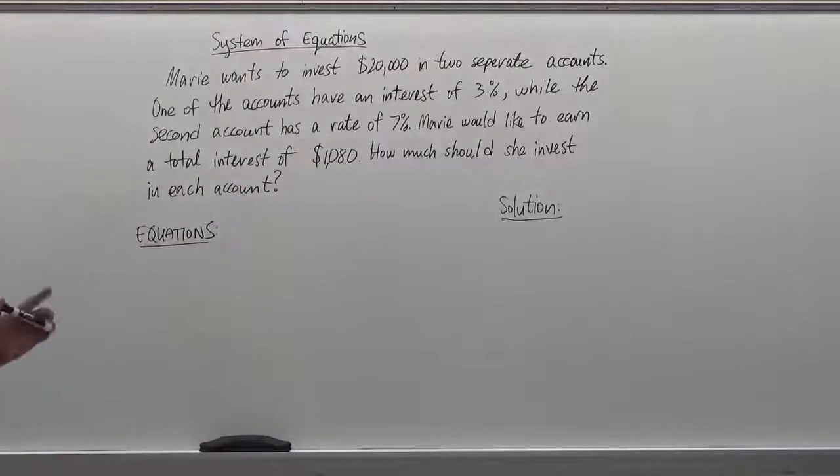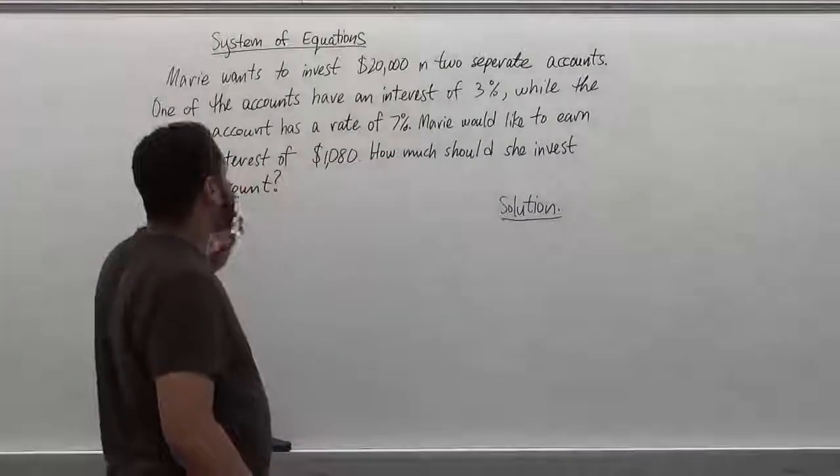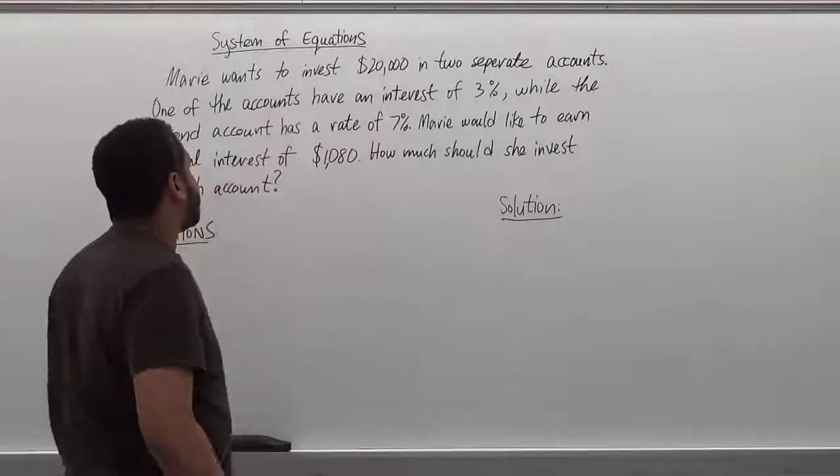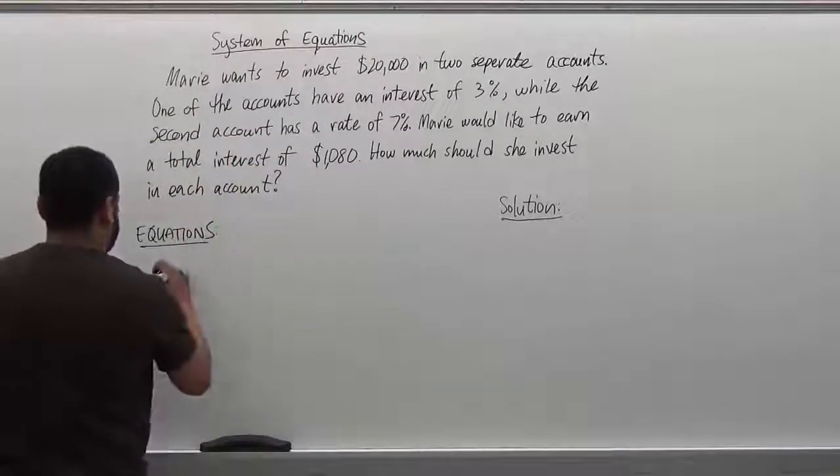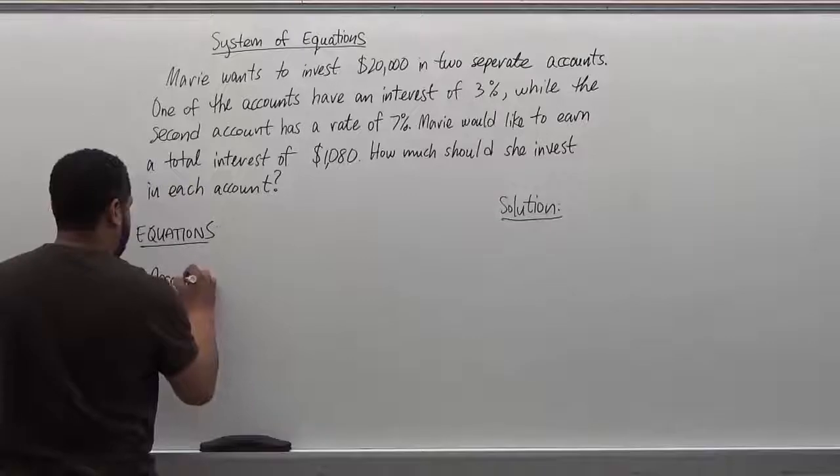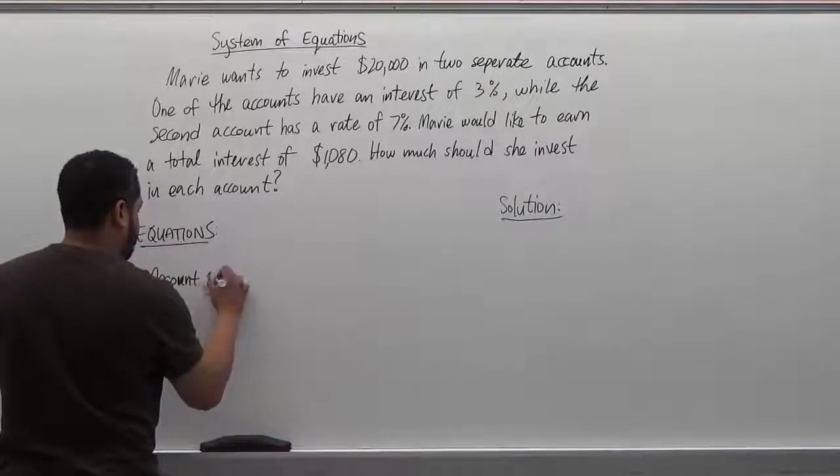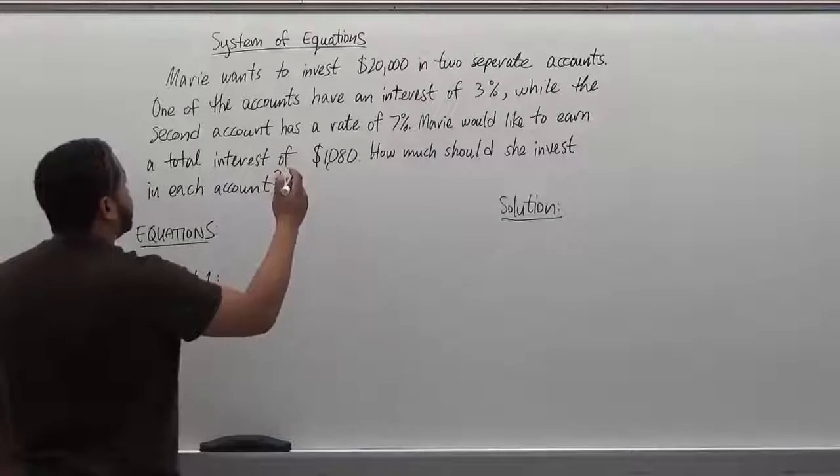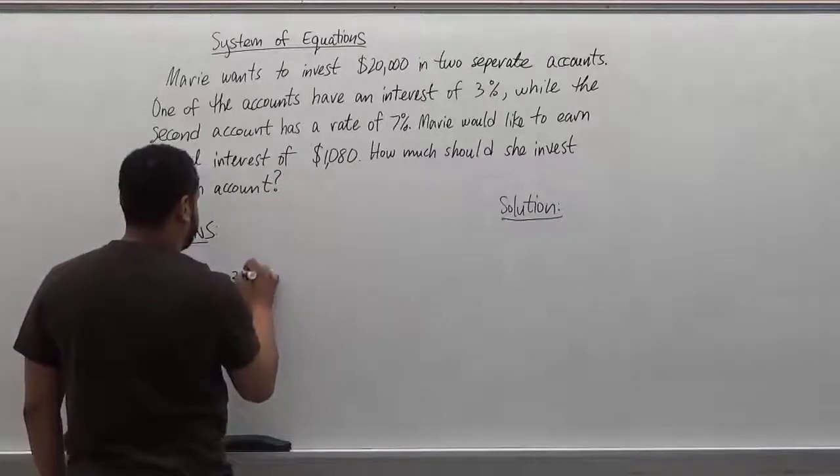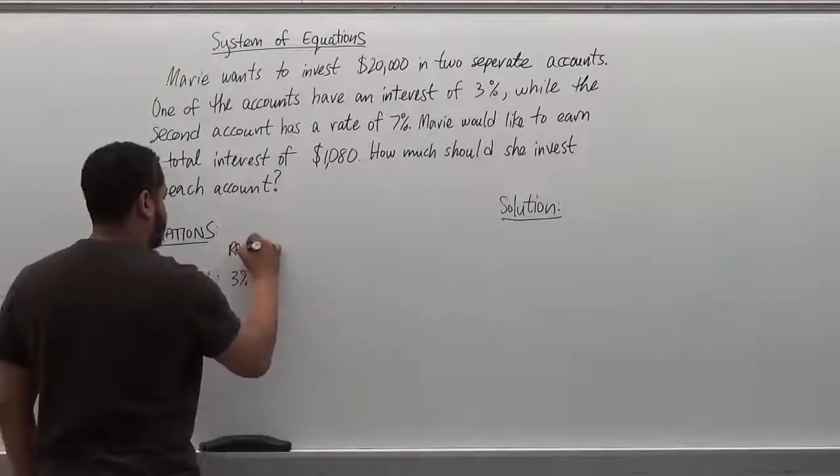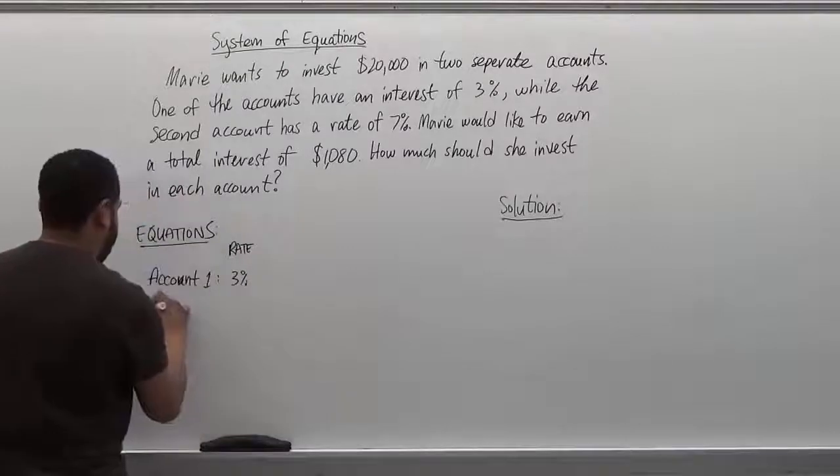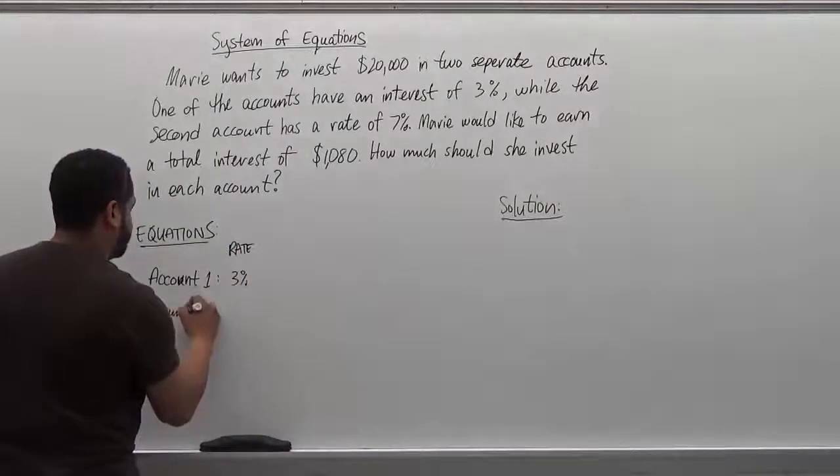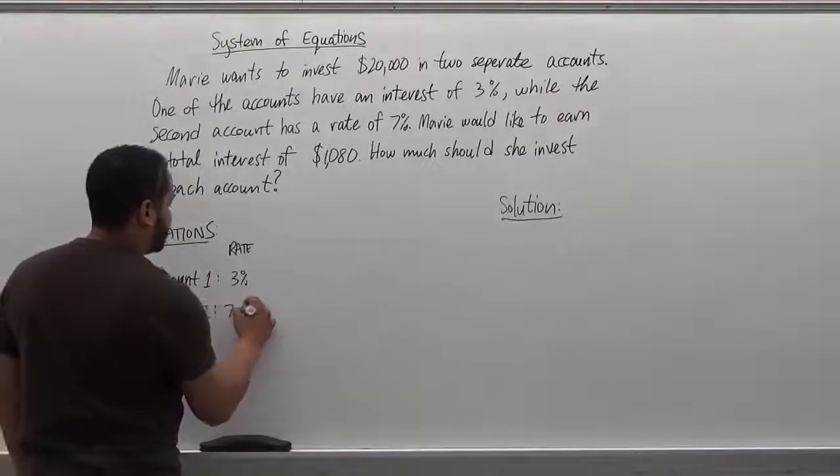So what we first have to identify here is we have two different accounts. The first account has a rate of 3%. Now the second account has a rate of 7%.